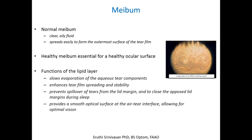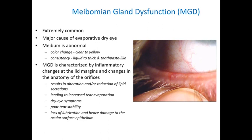Meibum itself has several functions. When it spreads over the ocular surface it forms the lipid layer, which is the outermost layer of the tear film, and it prevents the underlying aqueous layer and mucin layer from drying out. Its main function is to slow evaporation of the aqueous tear components and enhance tear film spreading and stability. It also prevents spillover of tears from the lid margin, seals the lid margins during sleep, and provides a smooth optical surface for good optimal vision.